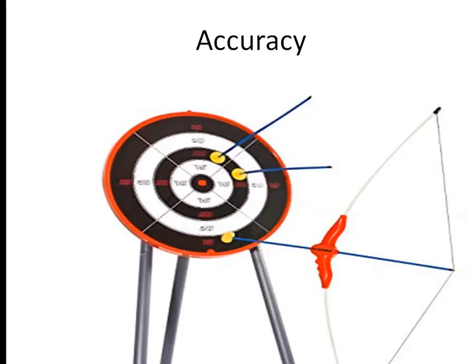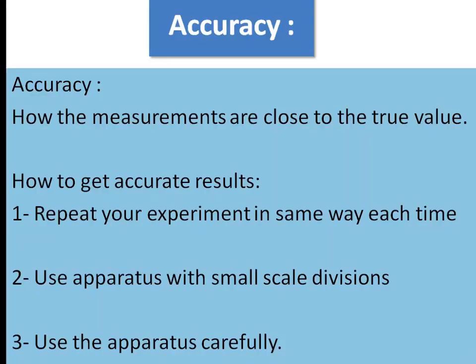Accuracy describes how close your measurement is to the true value. Values close to the center are considered accurate, whereas a value far away is not accurate. To make measurements more accurate: repeat the experiment in the same way each time by fixing the conditions; use apparatus with small scale divisions to reduce uncertainty; and use the apparatus carefully, since using it incorrectly causes mistakes and errors, including personal error.